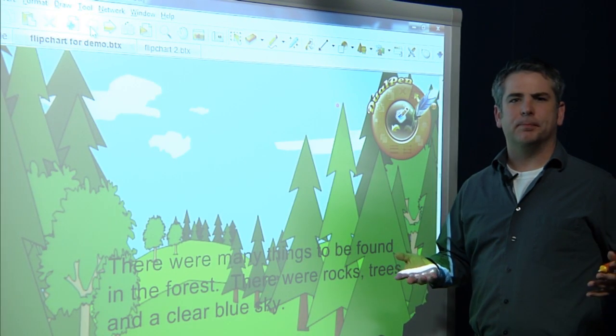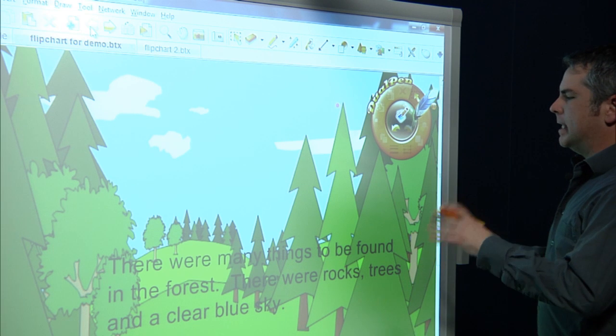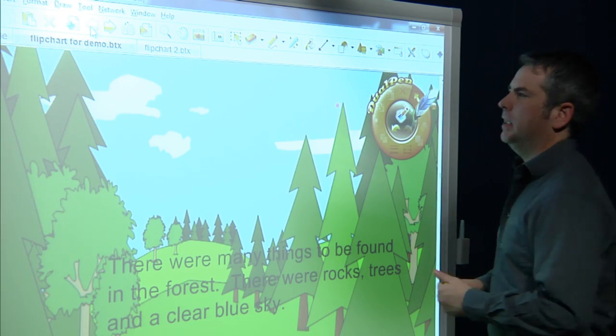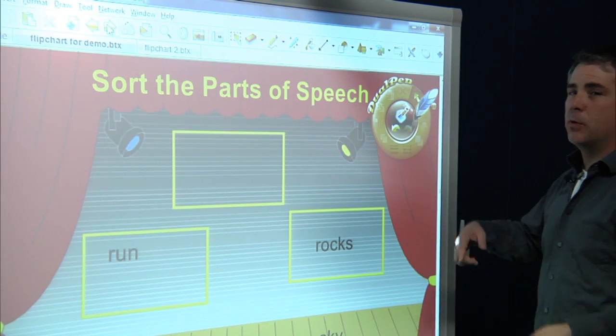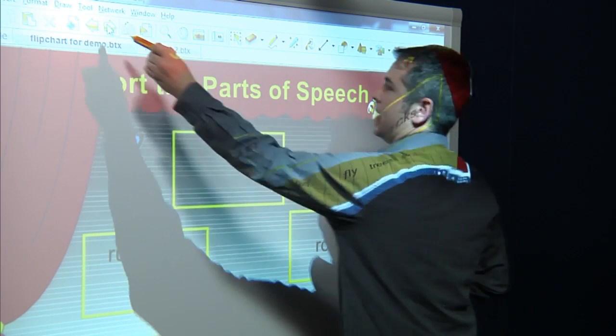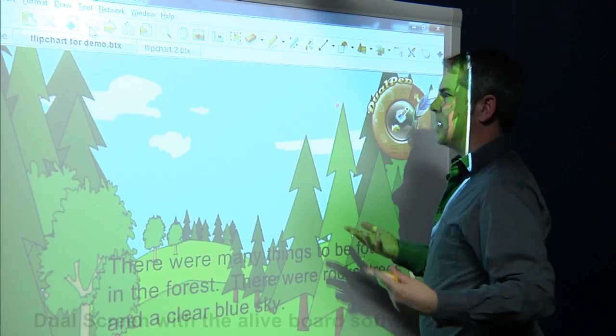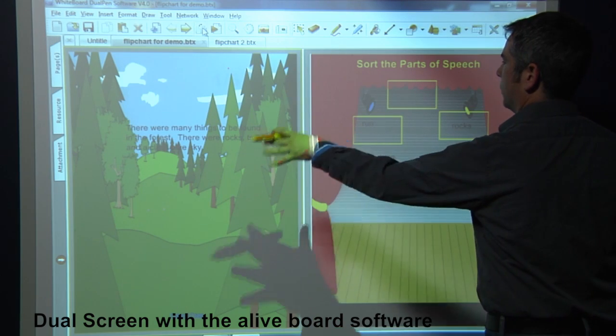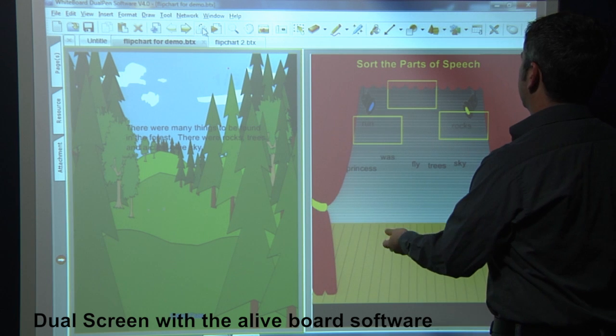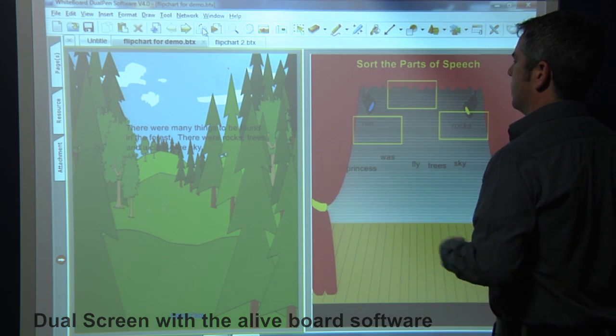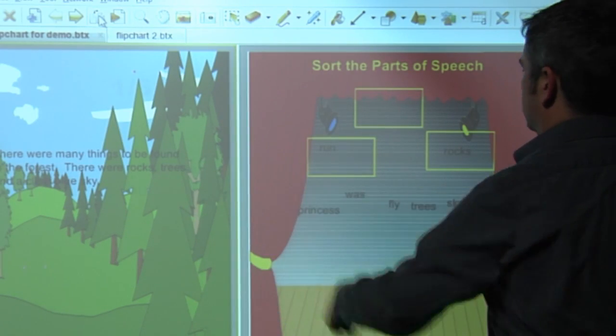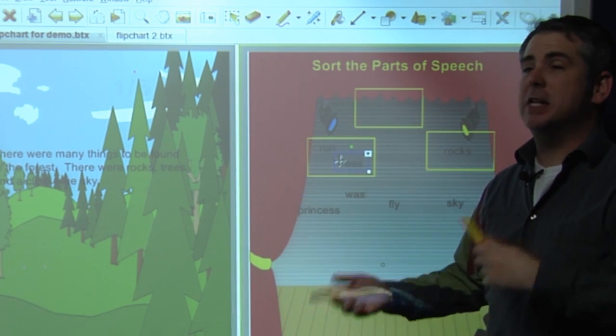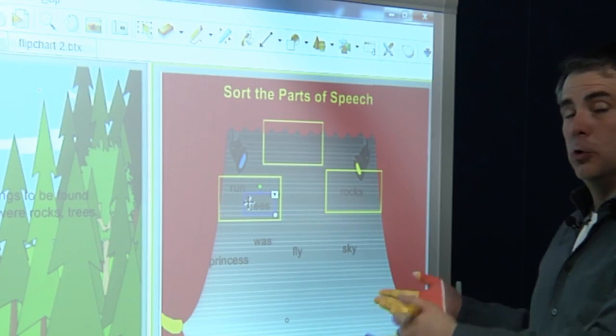Let's talk about dual screen. Right now I have an activity that centers around a short story. Very short, very simple. Now typically I would have to go to my next page, and if I need to refer back to the story, I've got to hit back once again. That's not the case with the Alive Board. All I have to do here is hit dual screen, and then I have my story on my left side. And I've got the activity, which in this case is sorting parts of speech, on my right side. So I can visualize the story while working on the worksheet on the right side. No need toggling back and forth right now. Dual screen.